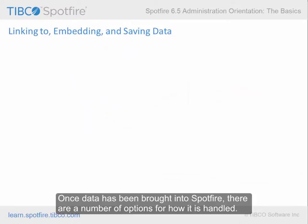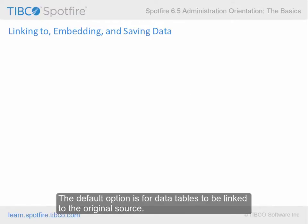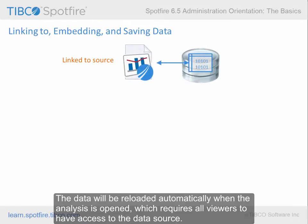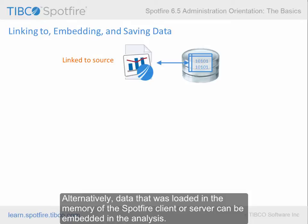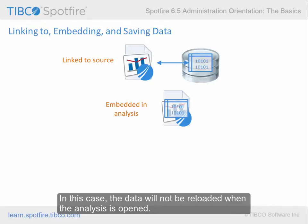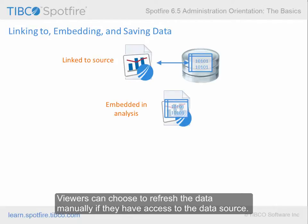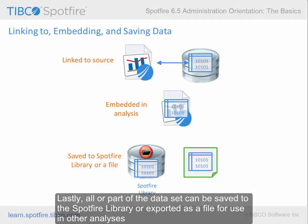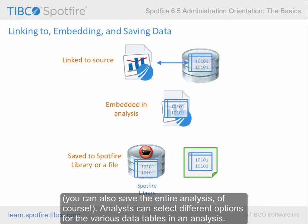Once data has been brought into Spotfire, there are a number of options for how it is handled. The default option is for data tables to be linked to the original source — the data will be reloaded automatically when the analysis is opened, which requires all viewers to have access to the data source. Alternatively, data that was loaded in the memory of the Spotfire client or server can be embedded in the analysis, in which case the data will not be reloaded when the analysis is opened, and viewers can choose to refresh the data manually if they have access to the data source. Lastly, all or part of the dataset can be saved to the Spotfire library or exported as a file for use in other analyses. Analysts can select different options for the various data tables in an analysis.